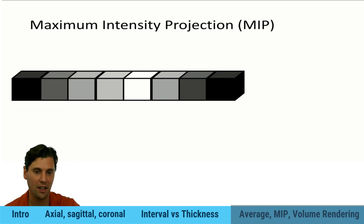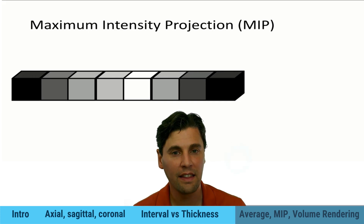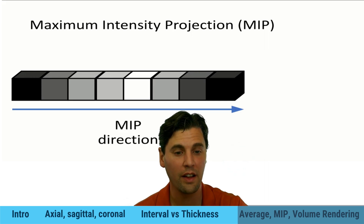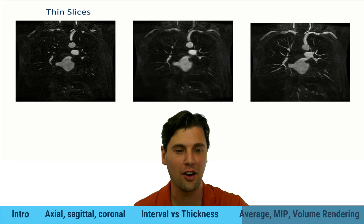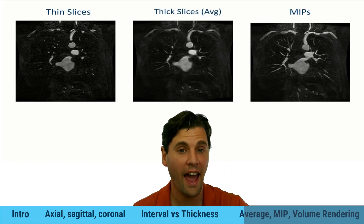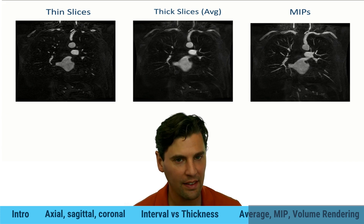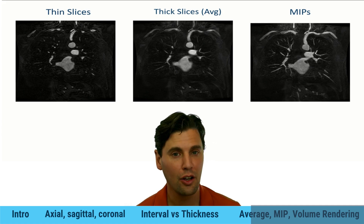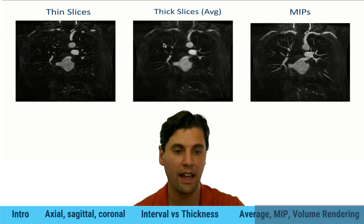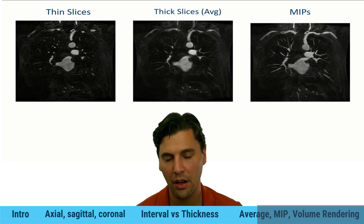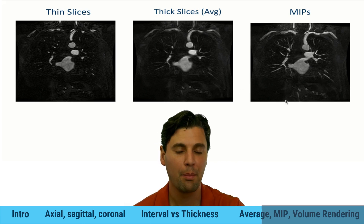A maximum intensity projection (MIP) works by taking the highest value along a ray through a given thickness. In the MIP direction, we just look for the brightest value and report that as the answer. Here's a demonstration comparing thin slices, average imaging, and MIPs. With relatively sparse data and high signal, MIP is actually a good choice — you can see the vessels relatively clearly, whereas they're a little more blurred with average imaging. Averaging is better for soft tissue, but for high-contrast cases with relatively few objects, MIP is a great choice.